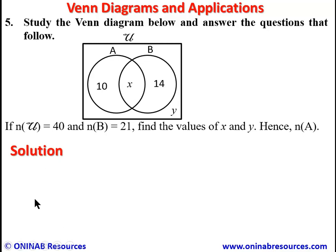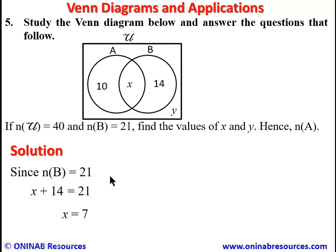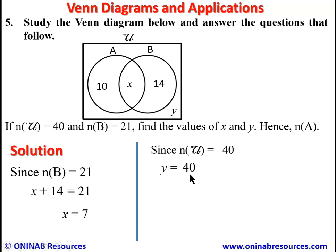Since n(B) = 21: X + 14 = 21, so X = 7. Then n(U) = 40, so Y = 40 − (10 + 7 + 14) = 40 − 31 = 9.